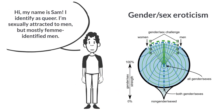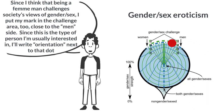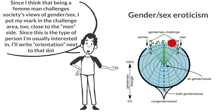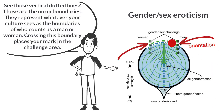Hi, my name is Sam. I identify as queer. I'm sexually attracted to men, but mostly femme-identified men. Since I think that being a femme man challenges society's views of gender sex, I put my mark in the challenge area too, close to the men's side. Since this is the type of person I'm usually interested in, I'll write 'orientation' next to that dot. Those vertical dotted lines are the norm boundaries — they represent whatever your culture sees as the boundaries of who counts as a man or woman. Crossing this boundary places your mark in the challenge area.